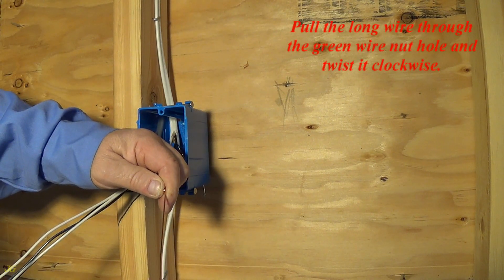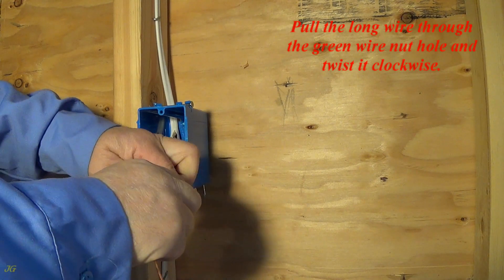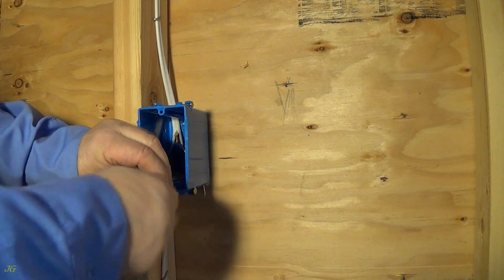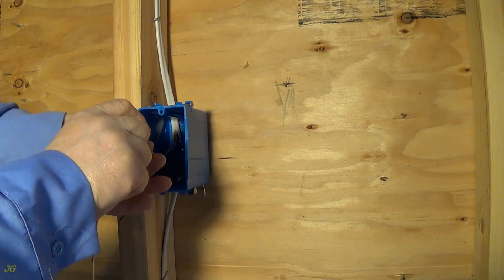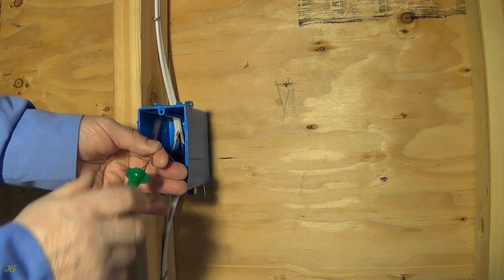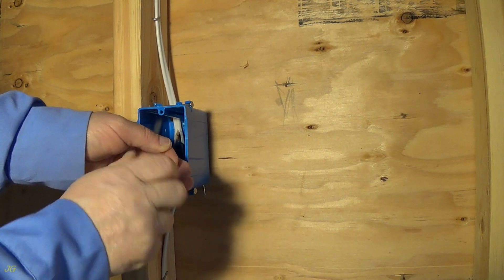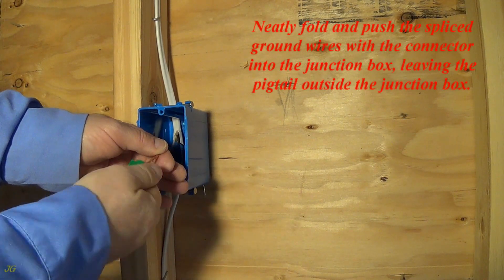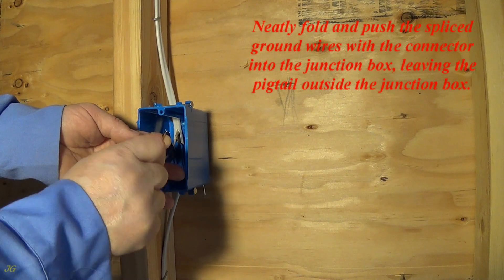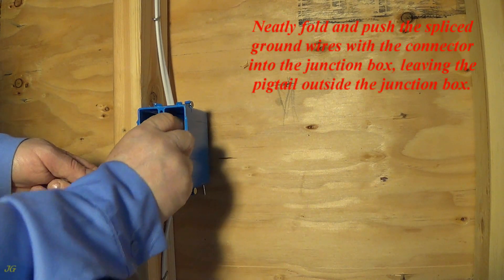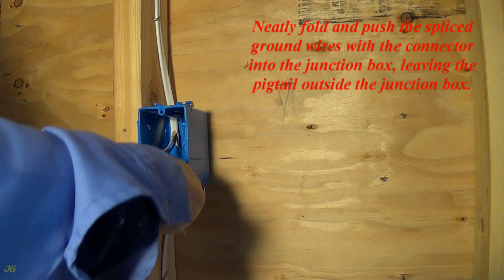Pull the long wire through the green wire nut hole and twist it clockwise. Neatly fold and push the spliced ground wires with the connector into the junction box, leaving the pigtail outside the junction box.